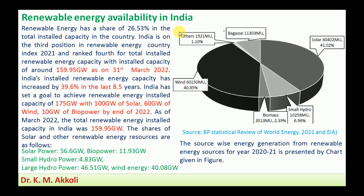The data I have taken is from the BP Statistical Review of the World 2021, which was published in March 2022. Data for 2023 is still not available and will be discussed when it is. The Environmental Impact Assessment report is another source from which we are getting statistics on renewable energy availability.